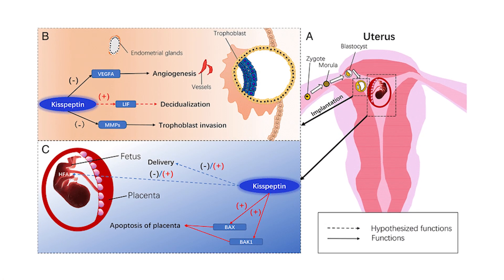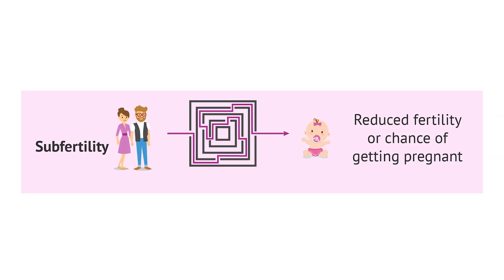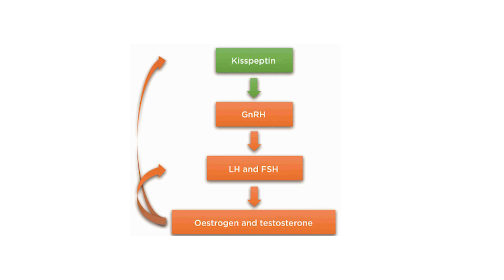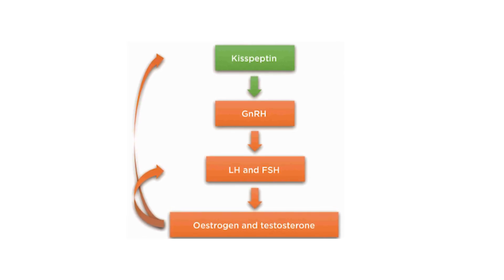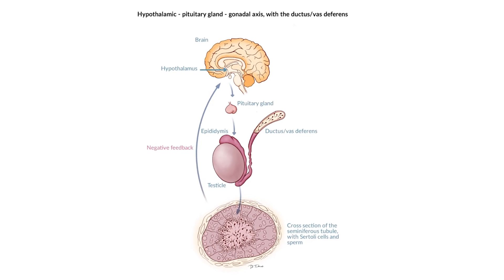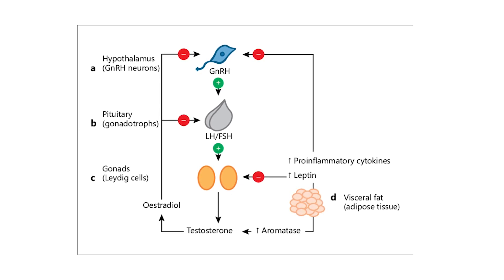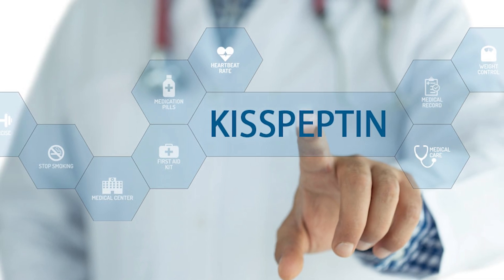The role of Kisspeptin in reproduction has led to the identification of possible treatments for sub-fertility and related disorders. External administration of Kisspeptin can stimulate the release of gonadotropin-releasing hormone without any side effects. In conditions such as hypogonadotropic hypogonadism and hormone-sensitive cancers, where boosting or inhibiting the reproductive axis is beneficial, manipulation in Kisspeptin signaling opens up several possibilities.